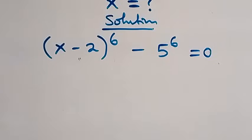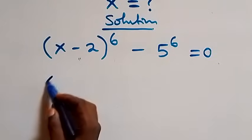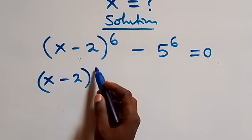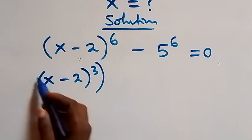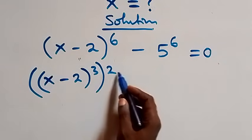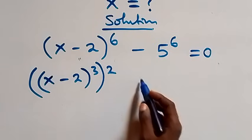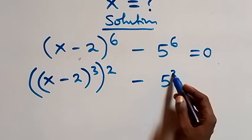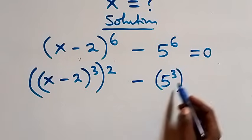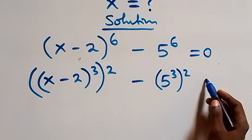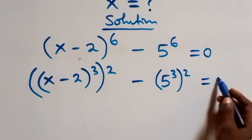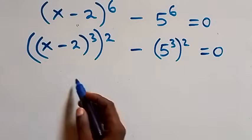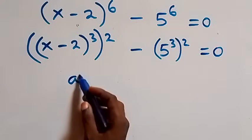From here we can write this as x minus 2 raised to power 3, then raised to power 2 — since 2 times 3 gives 6 — then minus 5 raised to power 3, then raised to power 2, also equals to 0. This follows the difference of two squares form.